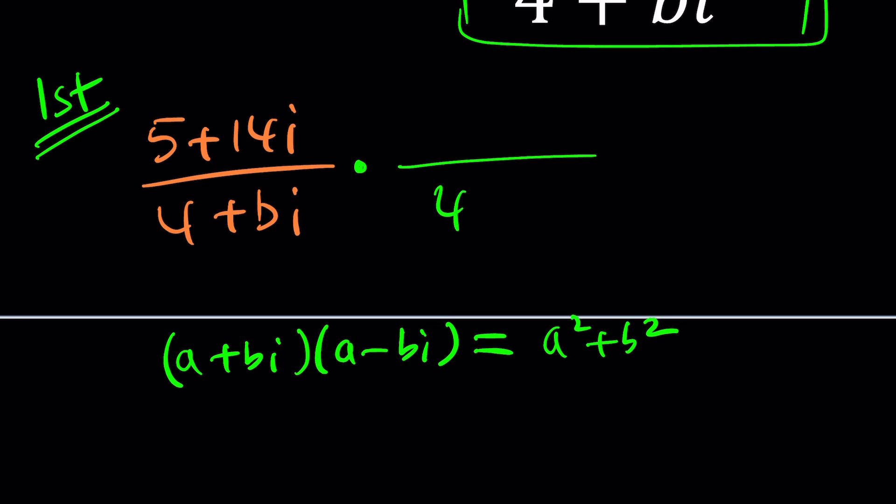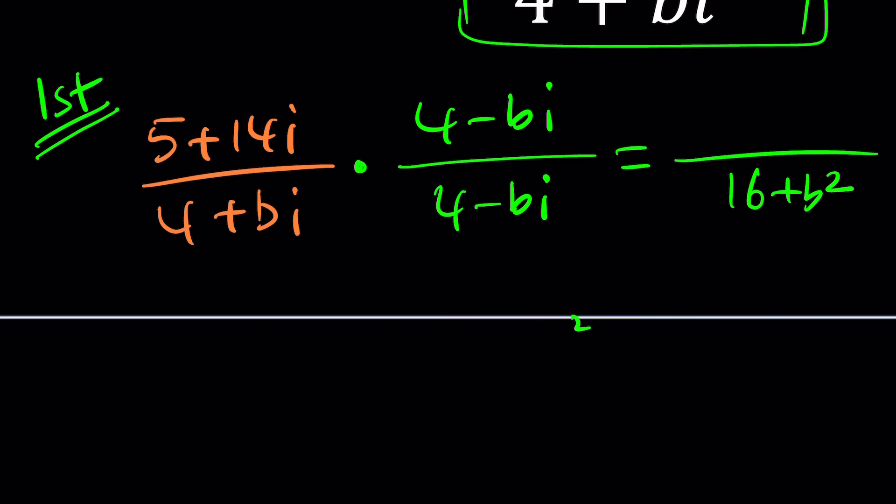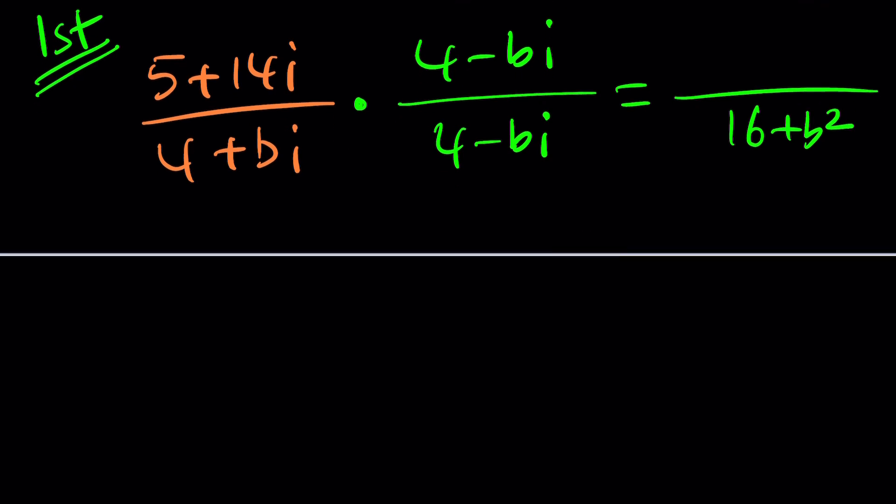Let's go ahead and find the complex conjugate of 4 plus bi. Easy. All you have to do is negate the imaginary part. And the imaginary part is the coefficient of i. It does not include i, just the coefficient. When you multiply two complex numbers, you use the distributive property. And of course, for the denominator, you must use the formula 16 plus b squared.